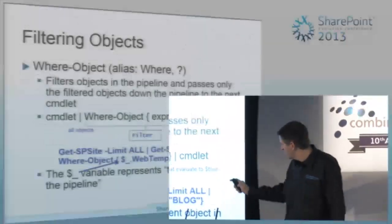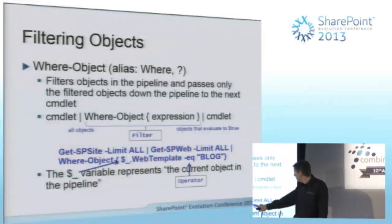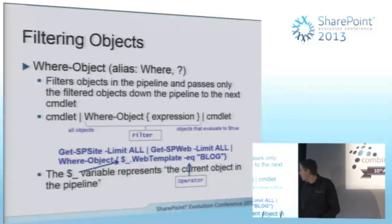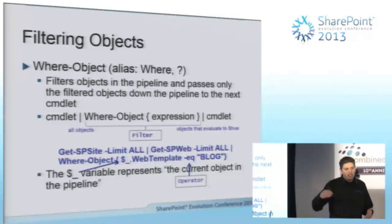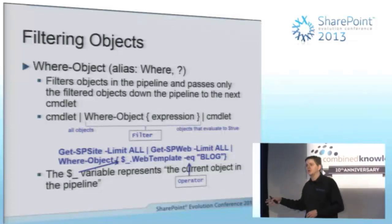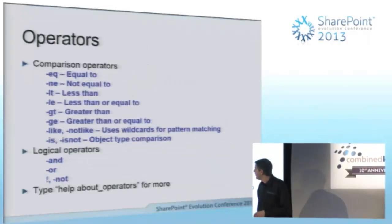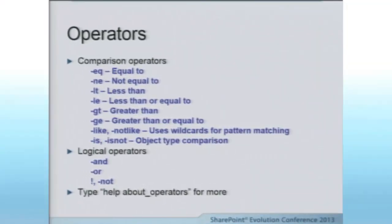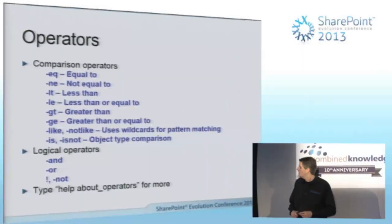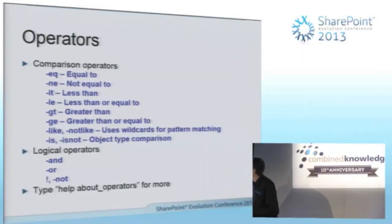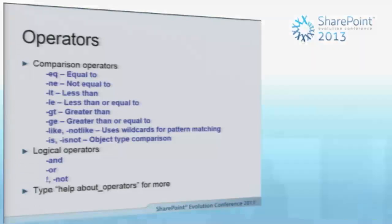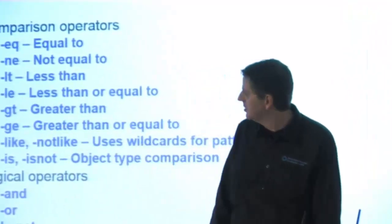Operators: C# developers will note that double-equals doesn't work here — it's dash-equal. There's a whole set of operators available. If you type 'help about_operators' it'll give you the full list. The format is simple: -eq, -ne, -lt, and so on.